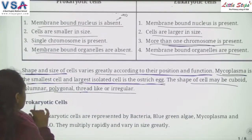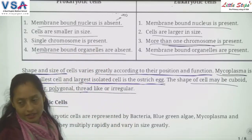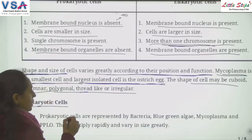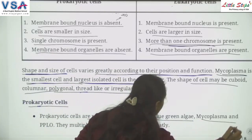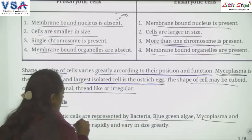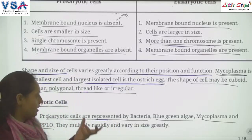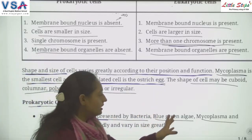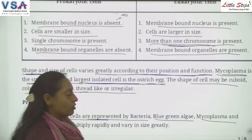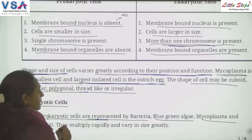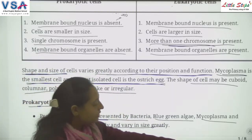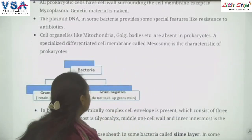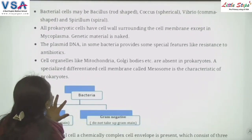Prokaryotic cells are represented by bacteria, blue-green algae, mycoplasma and PPLO. They multiply rapidly and vary greatly in size. Bacterial cells may be bacillus (rod-shaped), coccus (spherical), vibrio (comma-shaped), or spiral in shape.